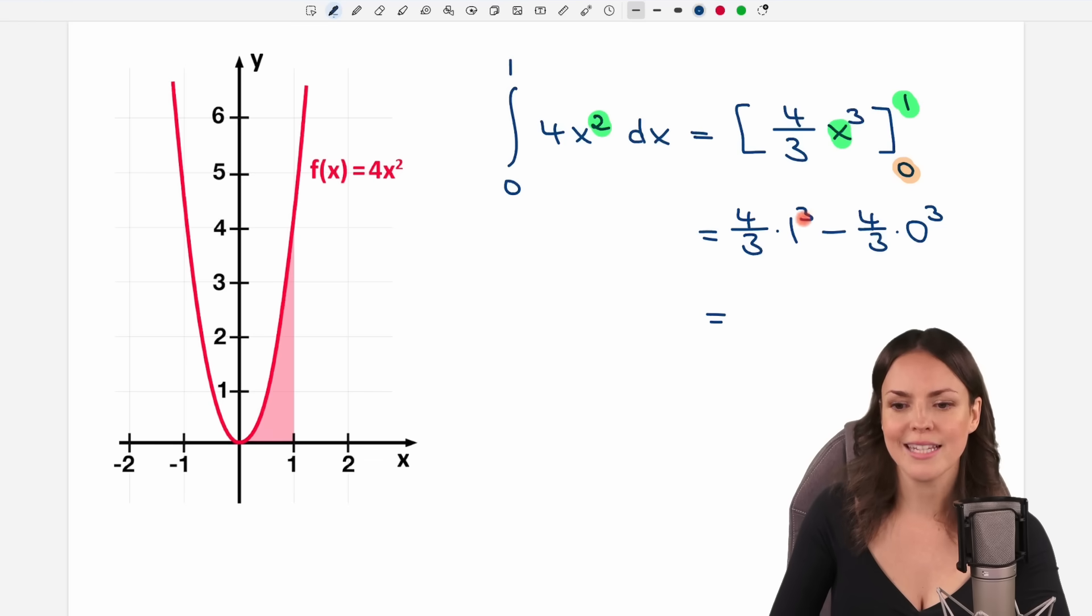Let's calculate this. 1 to the power of 3 equals 1 times 1, I don't need that. So I only have 4/3 minus this thing here gets 0. So this is my result of this integral, and 4/3 is the size of this specific area.